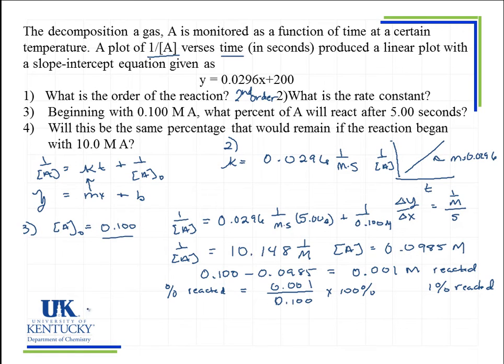Part 4 asks, will this be the same percentage that would remain if the reaction began with a whole lot more, if we began with 10 molar instead? Well, for second order reactions, the rate does depend very heavily and it changes more rapidly when you have a higher concentration. This would not be true for first order, but for second order it is true. But let's let the numbers work for themselves.